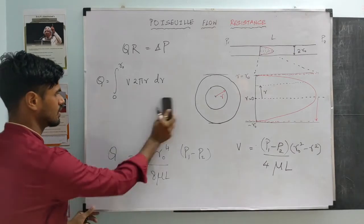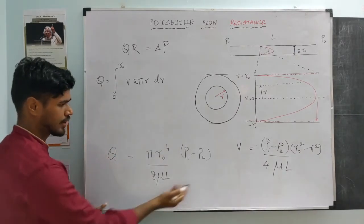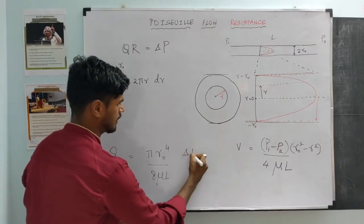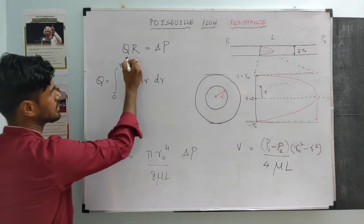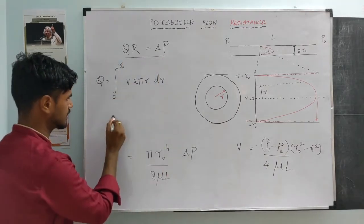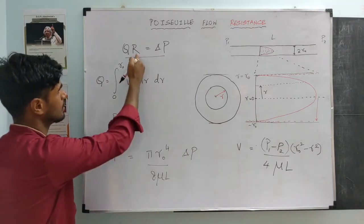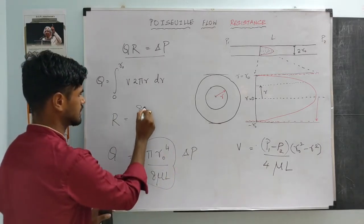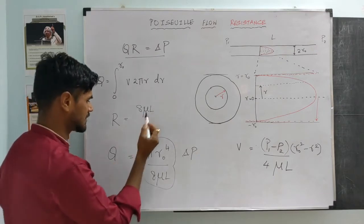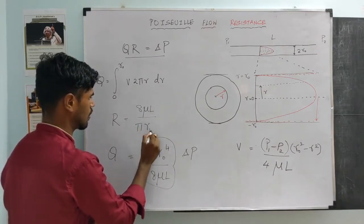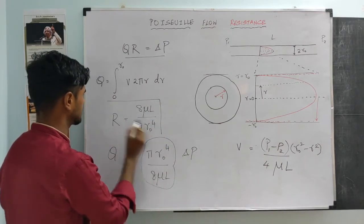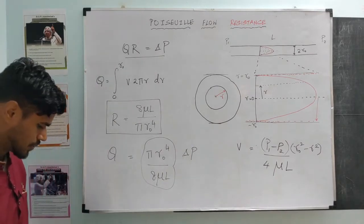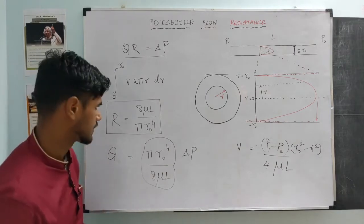Doing the integration, we essentially end up with the flow rate equal to a specific term, where P0 minus P1 is the pressure gradient. By comparing with the expression Q equals delta P over R, we can identify the resistance. The resistance is inversely proportional to pi R0 to the power 4. So this is the expression for the resistance of a blood vessel.